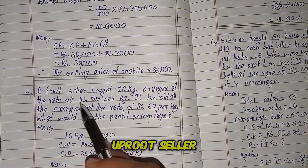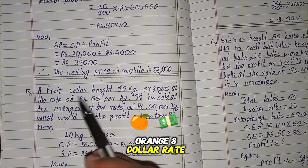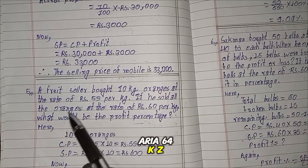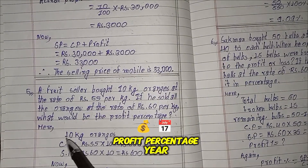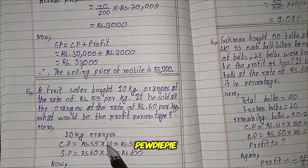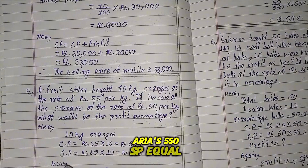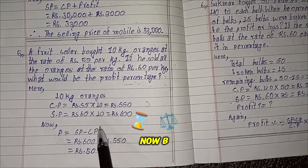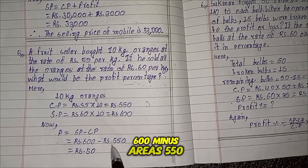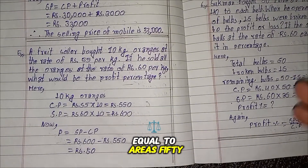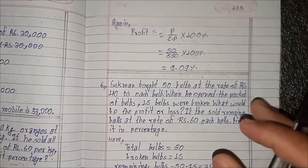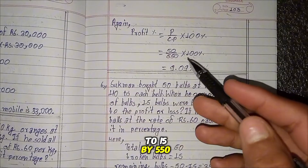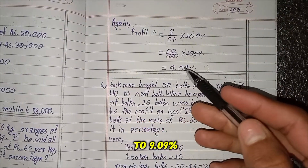Question 5: A fruit seller bought 10 kg oranges at the rate of RS 55 per kg and sold all the oranges at RS 60 per kg. What is the profit percentage? CP equals RS 55 multiplied by 10 equals RS 550. SP equals RS 60 multiplied by 10 equals RS 600. Profit equals SP minus CP equals 600 minus 550 equals RS 50. Profit percent equals 50 by 550 multiplied by 100 percent equals 9.09 percent.